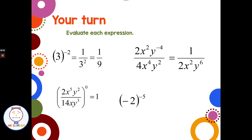Negative 2 to the negative 5 power — before multiplying anything, make it a positive exponent: 1 over negative 2 to the fifth. The base stays exactly the same whether it's a variable, whole number, or negative number. Then multiply: negative 2 times negative 2 times negative 2 times negative 2 times negative 2. A negative multiplied an odd number of times gives a negative answer, so we get 1 over negative 32.